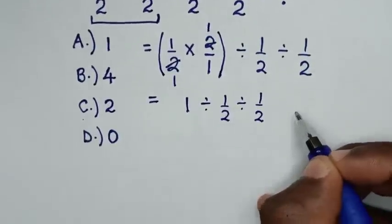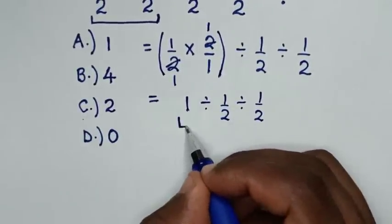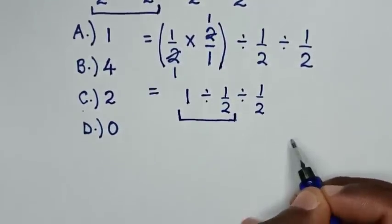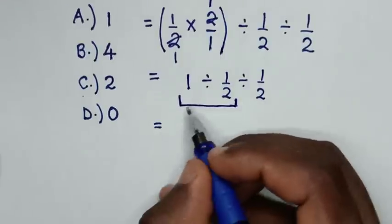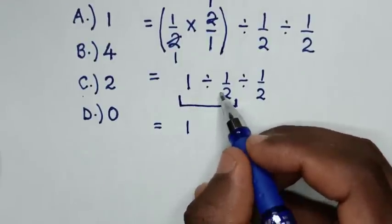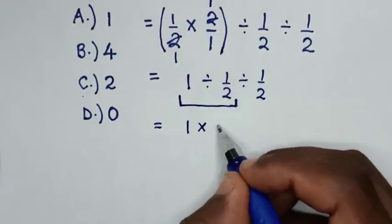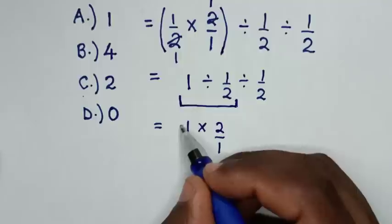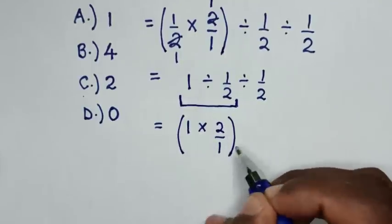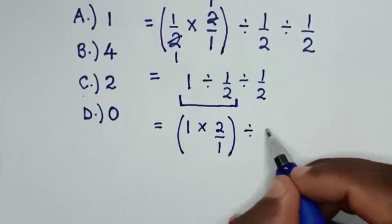Then in the next step, we'll start to deal with this first operation. Then it will be equal to 1 ÷ 1/2, which is the same as × 2/1, then bracket, then ÷ 1/2.